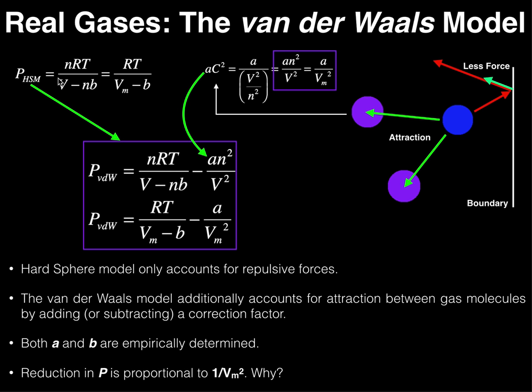We're going to focus on the non-molar form, because this one accounts for the electrostatic repulsions. What the van der Waals equation of state does is, in addition to accounting for electrostatic repulsions, it's now going to account for electrostatic attractions. The van der Waals model uses the hard shell term as is, but now adds another term. The van der Waals pressure equals nRT divided by the quantity V minus nB — exactly the same as before — but now we subtract a times n squared divided by V squared.